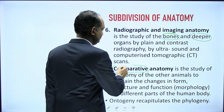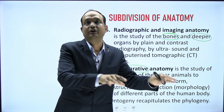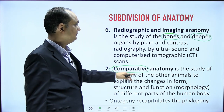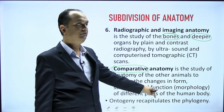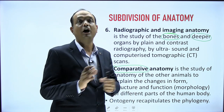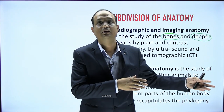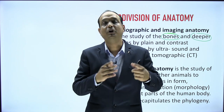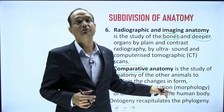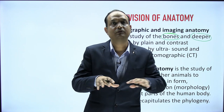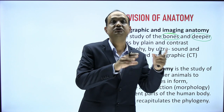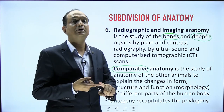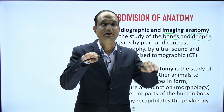Comparative anatomy involves comparing humans with other animals — comparing the organs of humans with the organs of other animals to explain changes in form, structure, function, and morphology. For example, why do we have a four-chambered heart? Why don't we have a tail? How did our limbs develop due to our erect posture? Comparing two species — human and other animals — gives an idea of the functional and structural changes that occurred in human organs.